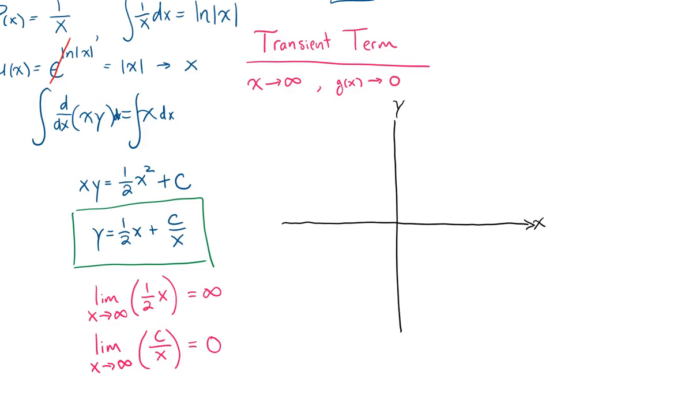then the second term, the c over x, is going to eventually disappear and become infinitesimally small, which means that our family of solutions, regardless of what the c is, is going to approach, at some point, the function 1 half x, which looks like this.